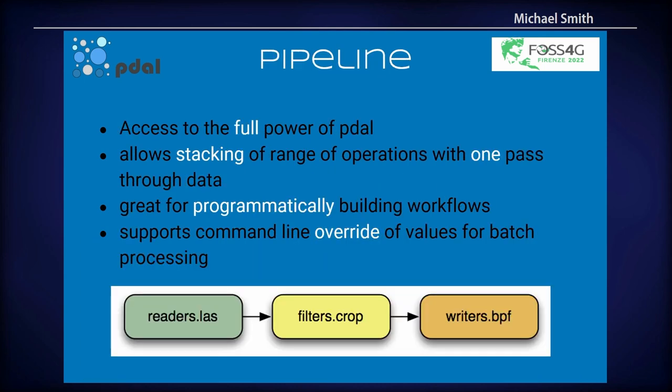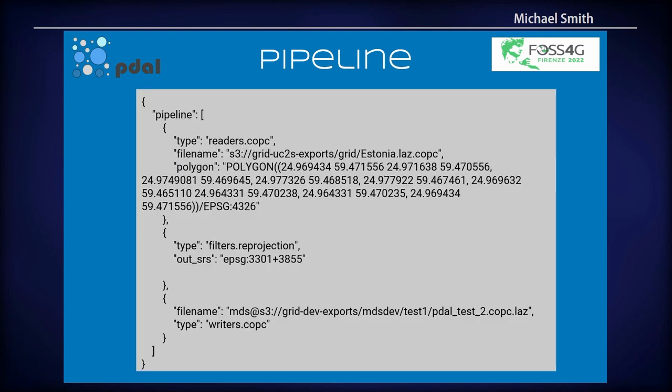The pipelines are the full power of Poodle. They allow you to stack a series of operations together programmatically to build an actual workflow, all done using a JSON pipeline. Here's an example of a pipeline with a reader — reading right out of S3 using the Arbiter library — a reprojection filter, and then an output. This is also an example of the multi-profile support that was just added: using a different profile to write this dataset than to read it, allowing you to set credentials at the individual file level.